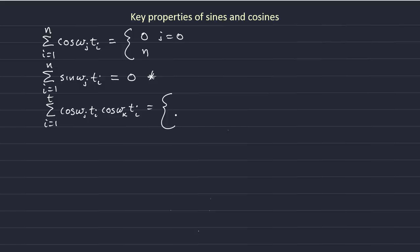Let's consider the situation of j is equal to k, but it's not equal to 0. If that's true, if we're looking at the same frequency of oscillation, then what we have is a sum of cosine squared omega k t i.